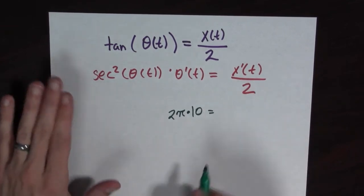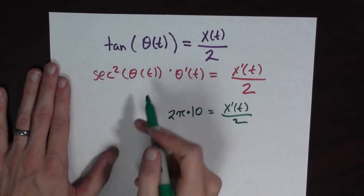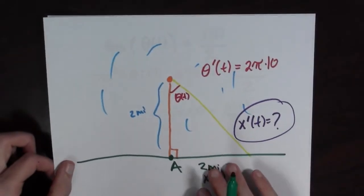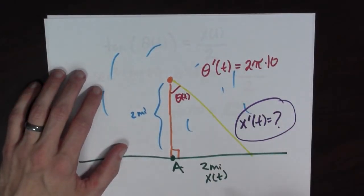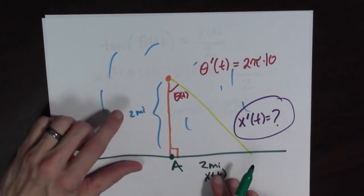And I don't know anything about x'(t). That's my unknown. x'(t) over 2. Now what about secant of θ(t), secant squared of θ(t)? Well, secant is 1 over cosine. And what do I know about this triangle when I have 2 miles and 2 miles here?